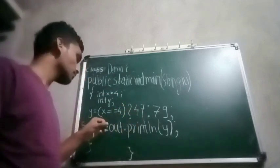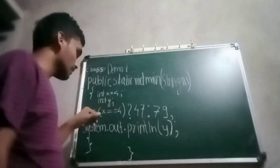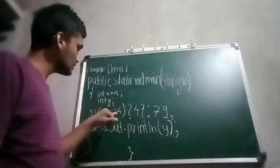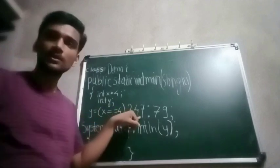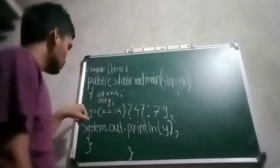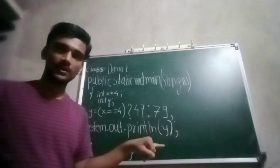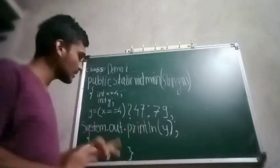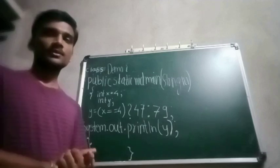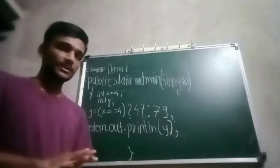We have printed output that is y. It will check the condition first, then return true, that is 47. This 47 has been assigned to y and we have printed y. This is the ternary operator which we can write in a single line, like an if-else statement.